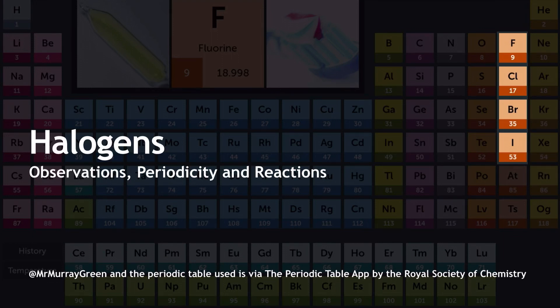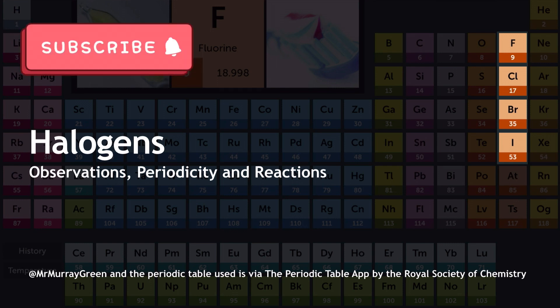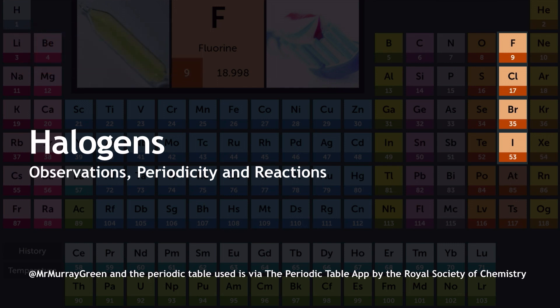The halogens topic is a surprisingly intricate and complicated part of your A-level, which loads of people overlook. In this tutorial, I'm going to take you through the different observations, periodicity, and reactions you need to be aware of for your A-level in chemistry, in line with the OCR-A specification.